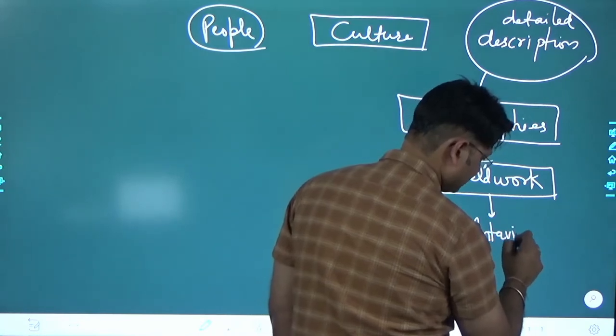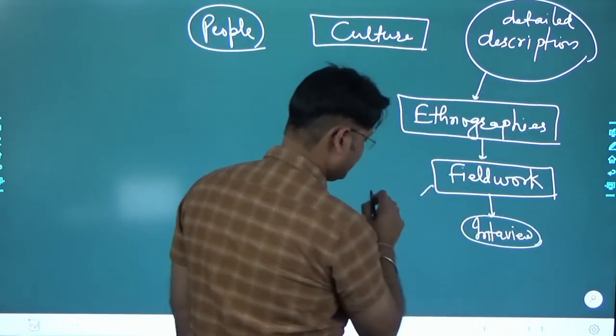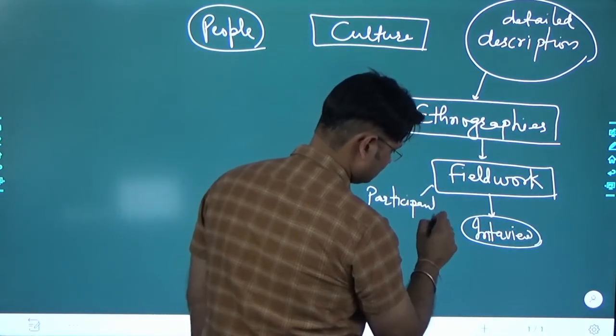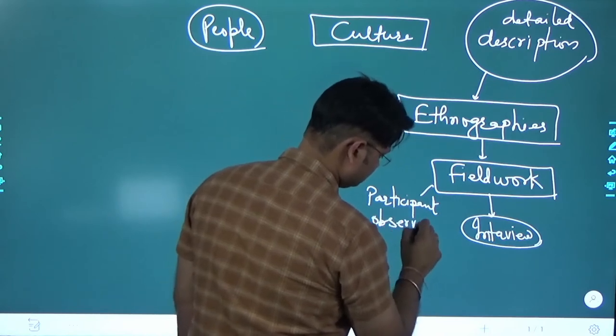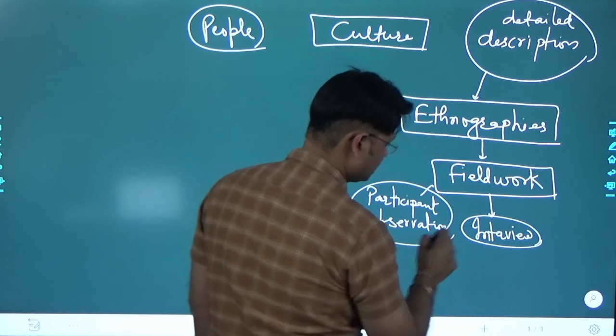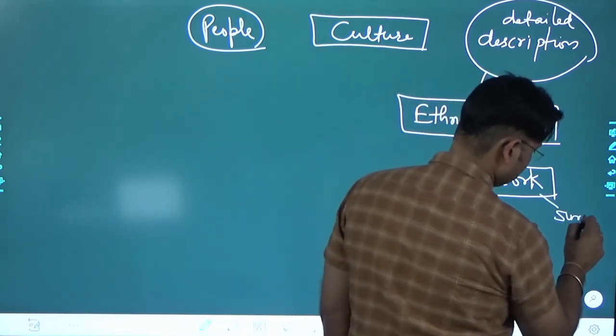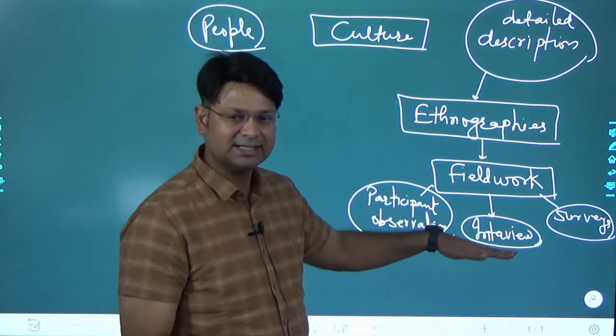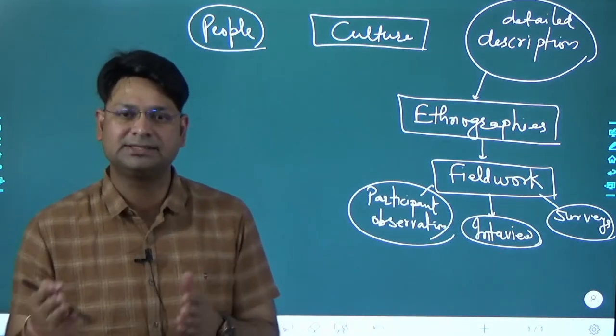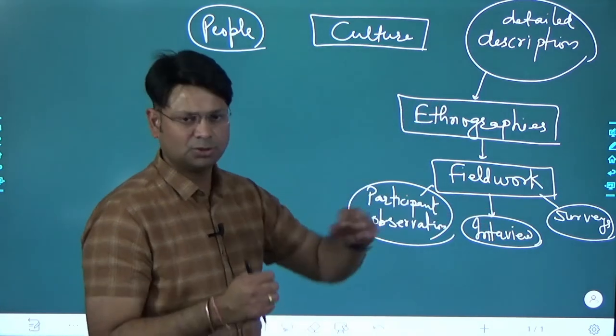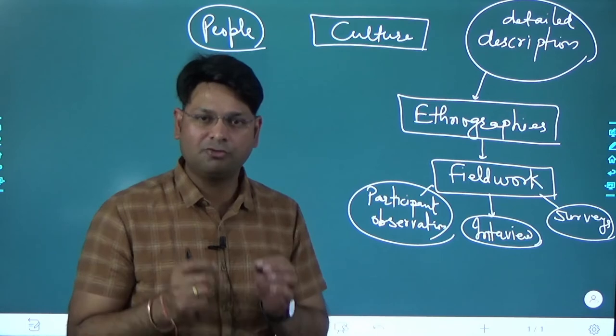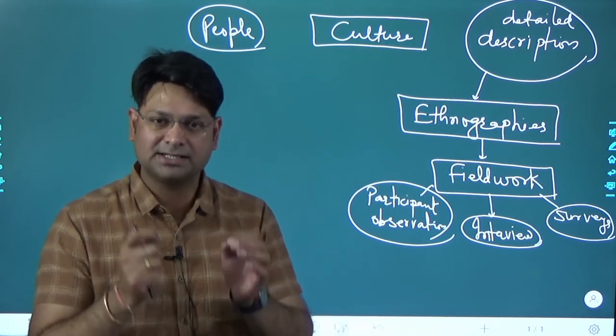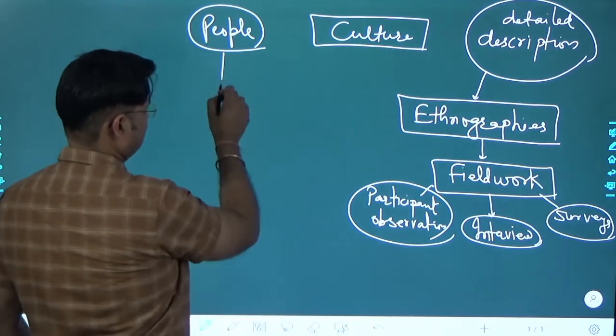They can use surveys, questionnaires, etc. All these methods, and on the basis of the data collected, they describe the entire culture. That is what ethnography is. The aim of ethnography is detailed description, systematic description of a culture.